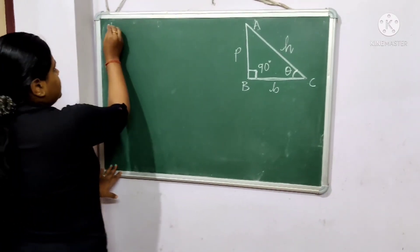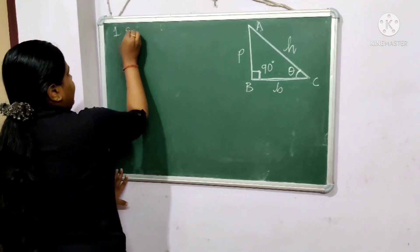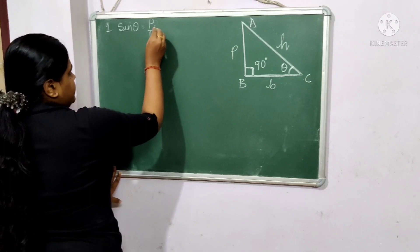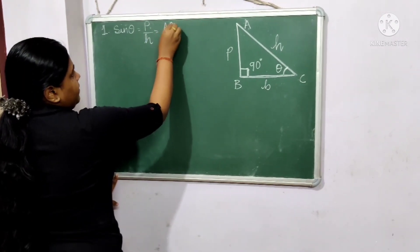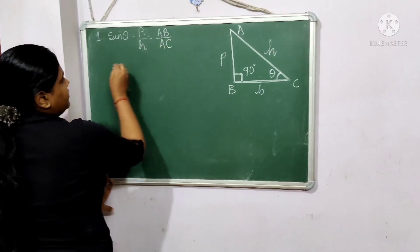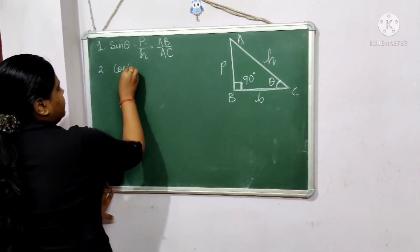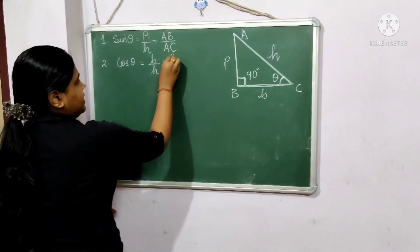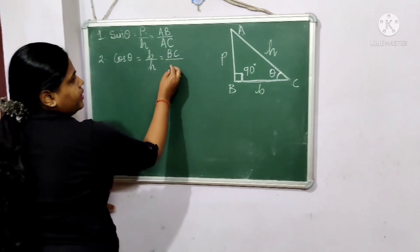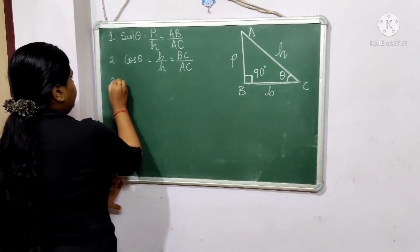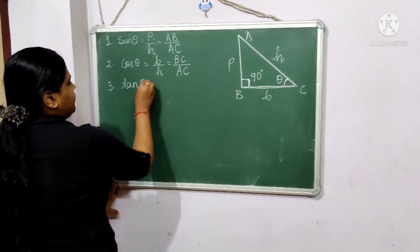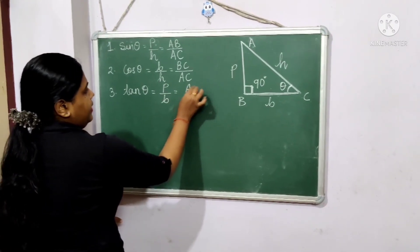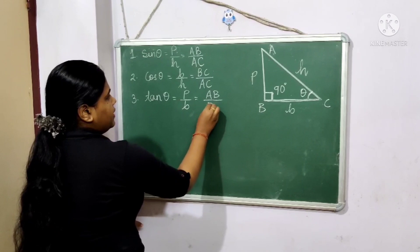Now we will look into the trigonometry ratios. First one is sine theta, which is perpendicular by hypotenuse, that is AB by AC. Second one is cos theta, which is base by hypotenuse, that is BC by AC. Third one is tan theta, which is perpendicular by base, that is AB by BC.